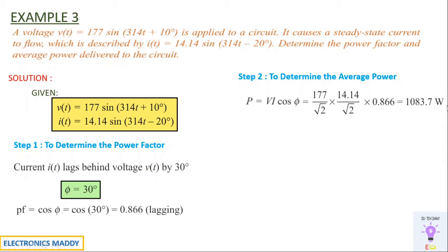Substituting the RMS values and cos φ = 0.866, you obtain the average power consumed. Students often directly substitute peak values of V and I, which is wrong. Be very careful with this step. This is how we solve this type of problem.